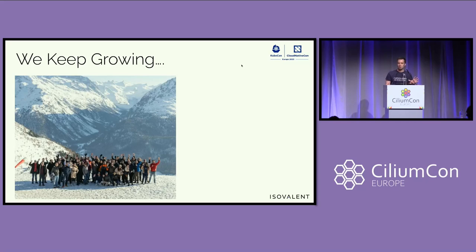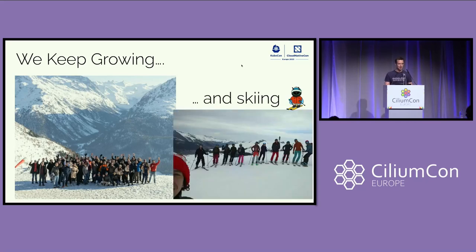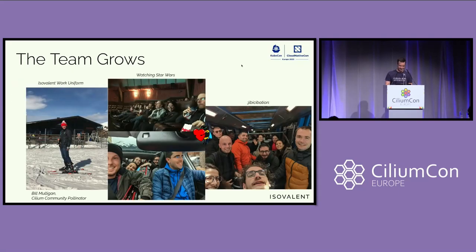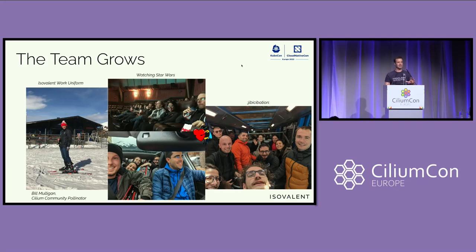We kept growing as a company — and we also kept skiing. The team kept growing. You see Bill, the Cilium Community Pollinator, in the semi-official Isovalent work uniform skiing. We also watched Star Wars, did cross-country skiing, and so on. Lots of fun being had while we grew the company.